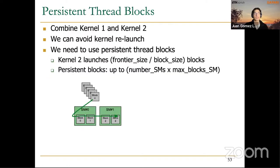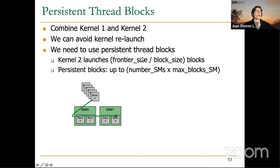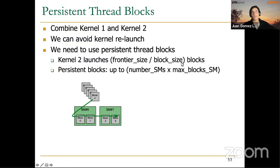To avoid this kernel termination and relaunch overhead, I will present a technique called persistent thread blocks. In the Kernel 2 implementation, we launch as many thread blocks as the frontier requires — for a frontier of size 2²⁰ with blocks of 1,024 threads, that's 1,024 thread blocks. These are scheduled onto available cores: when a GPU has two SMs each holding two concurrent thread blocks, we map blocks 0 and 1 to SM0, and blocks 2 and 3 to SM1.